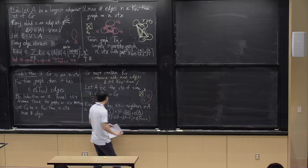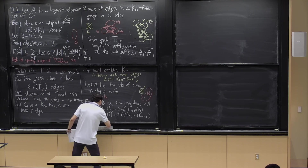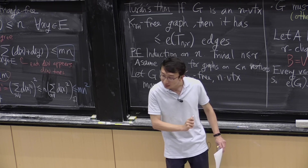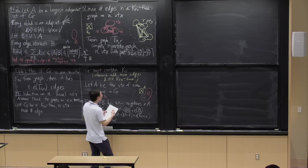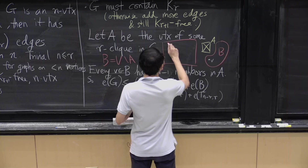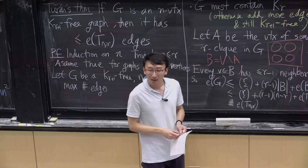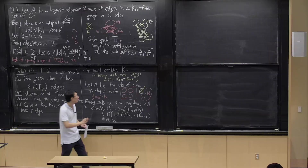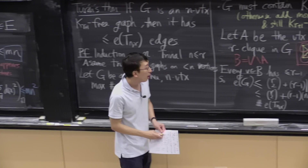You can do a calculation or remember to keep the tight example in mind: everything should check out for the tight example. If you are in the situation of a complete multipartite graph with nearly equal size parts, A is one vertex from each part. Read off this calculation for this graph, and you see it gives equality. You don't need to do any actual calculations.